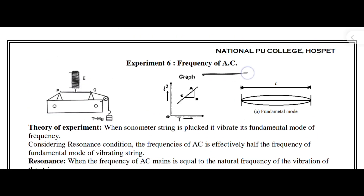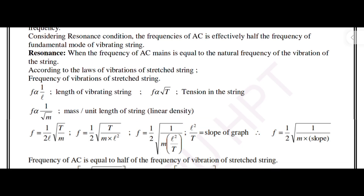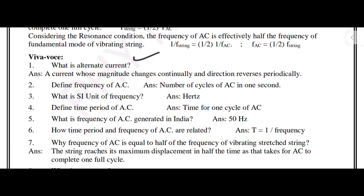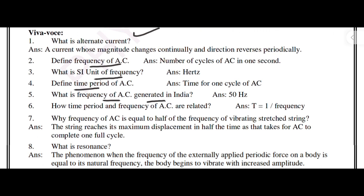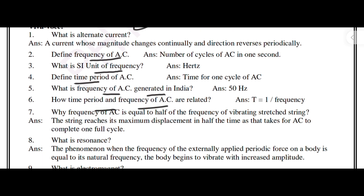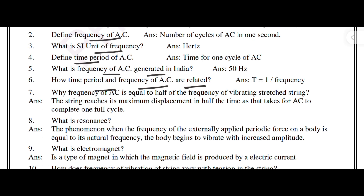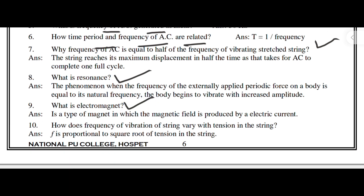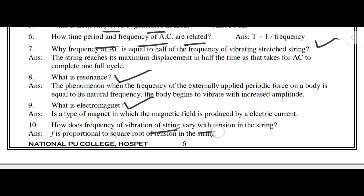Next is the experiment on frequency of AC. The VIVA questions are: what is alternating current; define the frequency of AC; what is the SI unit of frequency; define the time period of AC; what is the frequency of AC generated in India; how are time period and frequency of AC related; why is the frequency of AC equal to half the frequency of a vibrating stretched string; what is resonance; what is an electromagnet; how does the frequency of vibration of a string vary with tension?